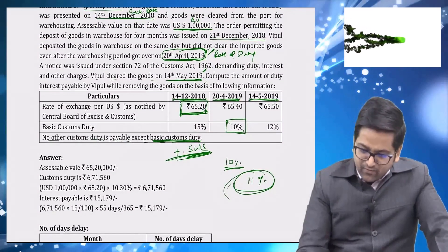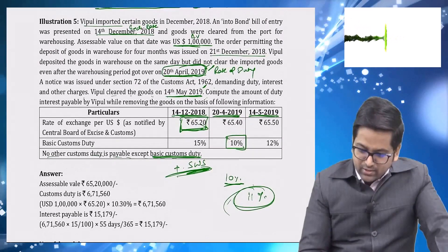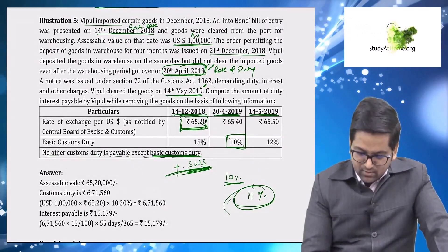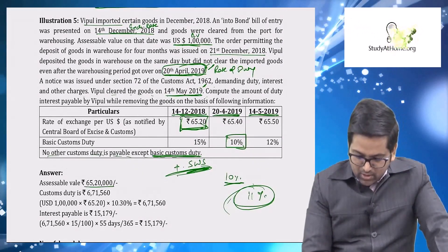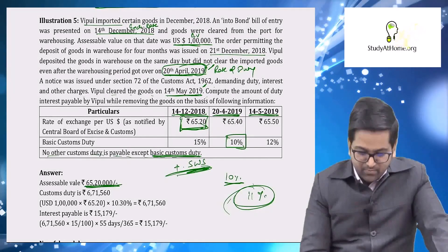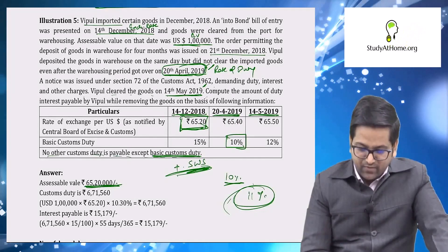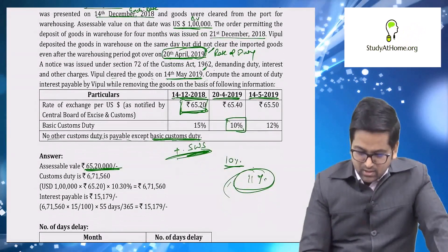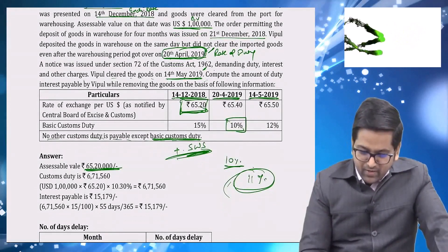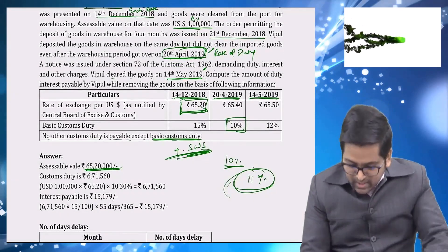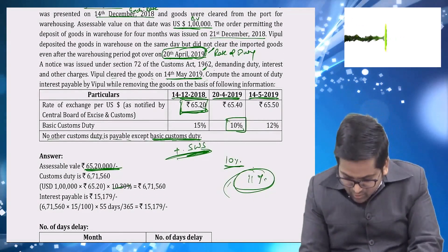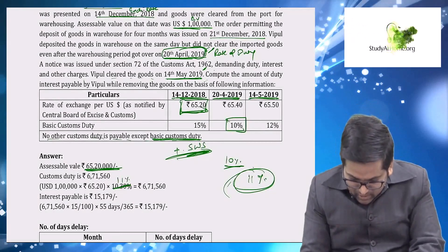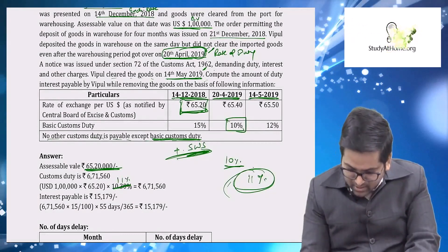Assessable value = US $1,00,000 × ₹65.20 = ₹65,20,000. Now 11 percent of ₹65,20,000 will give the total custom duty. Note: there is a typing error in the slide — please correct it to 11 percent.